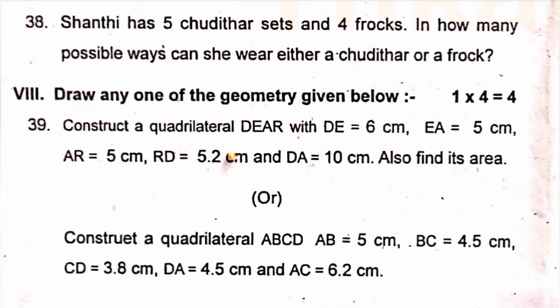Or, construct a quadrilateral ABCD, AB 5 cm, BC 4.5 cm, CD 3.8 cm, DA 4.5 cm and AC 6.0 cm.